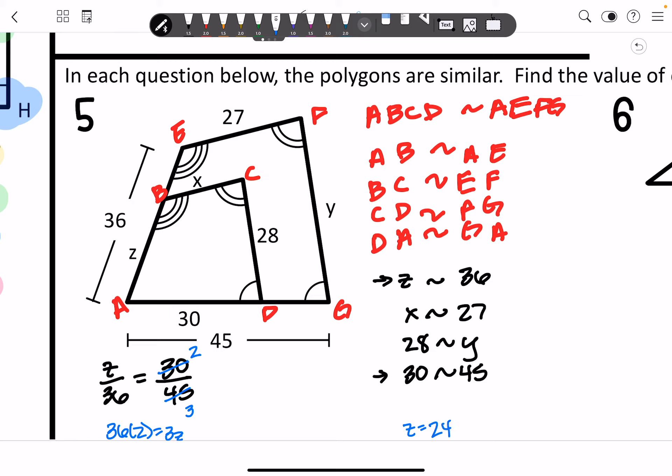And that's going to end up getting you 24. And another way that you could do it, if you see it, is 3 times 12 got you 36. So 2 times 12 is going to get you whatever Z is.